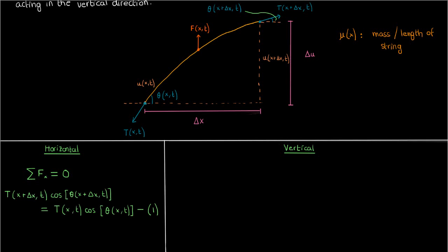Now let's look at the vertically acting forces. Because the string is moving in the vertical direction, we need to use Newton's second law in the vertical direction to describe the net vertical forces. The acceleration in the vertical direction is just the second partial derivative of u, which is the vertical displacement, with respect to the time t.